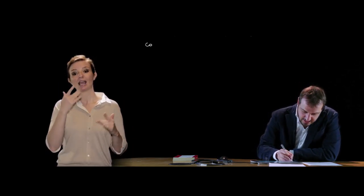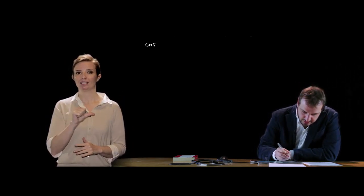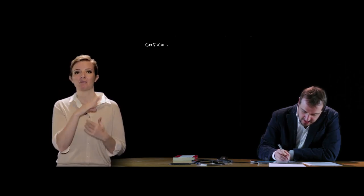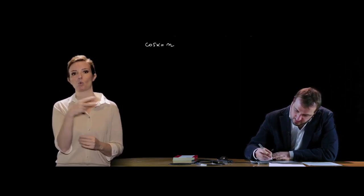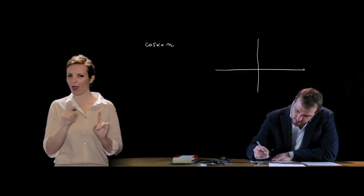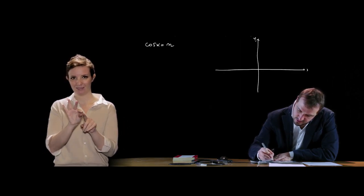Avendo visto le funzioni elementari in seno, andiamo a vedere le funzioni elementari in coseno, quindi gli angoli caratterizzati da un dato coseno: cos x = n. Come al solito ci aiutiamo con la circonferenza goniometrica.